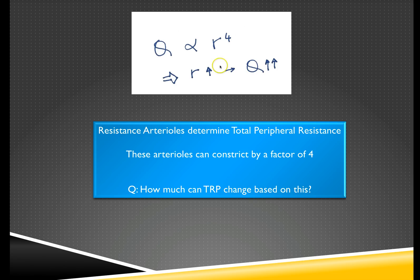As the radius goes up, the flow goes up in a much more dramatic manner. Or as we said before, if the radius reduces then the flow reduces to the fourth power. This is important in human physiology because resistance arterioles determine total peripheral resistance, and these arterioles can constrict by a factor of four. I'd like you to do a little mental experiment and try to work out how much can total peripheral resistance change based on the fact that arterioles can constrict by a factor of four.